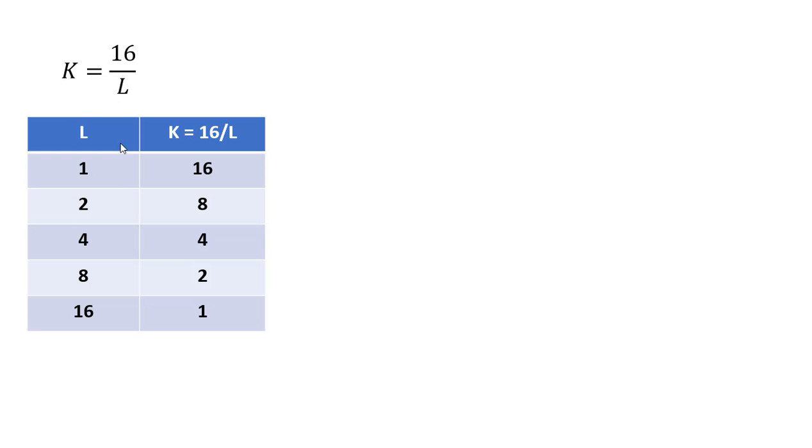If L is 1, just plugging L equals 1 into this equation here, K would be 16. That is one combination of labor and capital that produces 16 units of output.